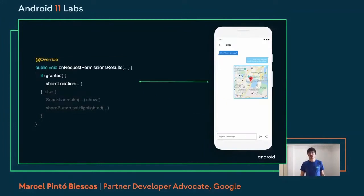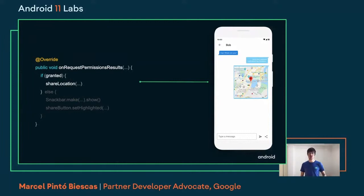Most likely at that moment, the user will understand clearly. And if they already clicked allow on your dialog, they are most likely going to grant access. Then you just do the action that was supposed to happen. So finally, Alice decides to grant the permission and we can share her location. Note that we are not trying to distinguish if the user selected 'only this time' or 'while in use' — both mean the same for us. If Alice selected 'only this time,' next time she wants to share the location, she will be asked again. But it's up to her to decide. We should just follow the same flow all the time — the same best practice.